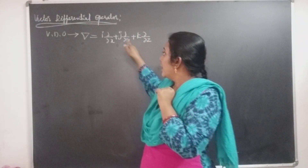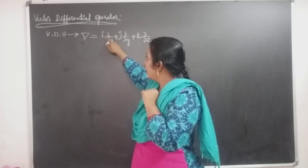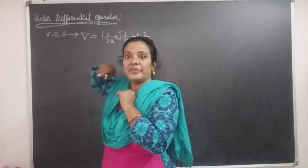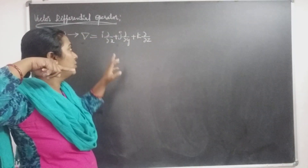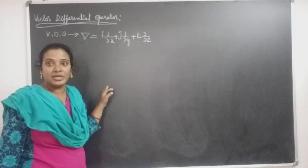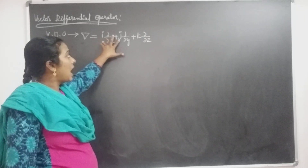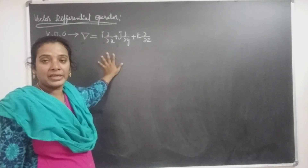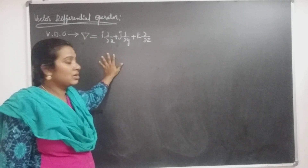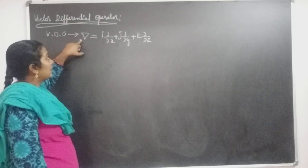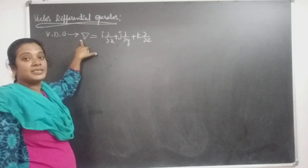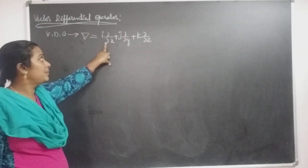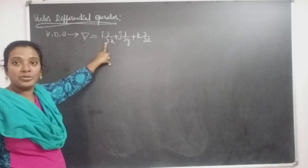The ordinary differential is denoted by d/dx, while the partial derivative is denoted by ∂/∂x, ∂/∂y, ∂/∂z, along with i, j, k — the unit vectors along the x, y, z axes. So the vector differential operator is generally denoted by del and is defined as i ∂/∂x plus j ∂/∂y plus k ∂/∂z.